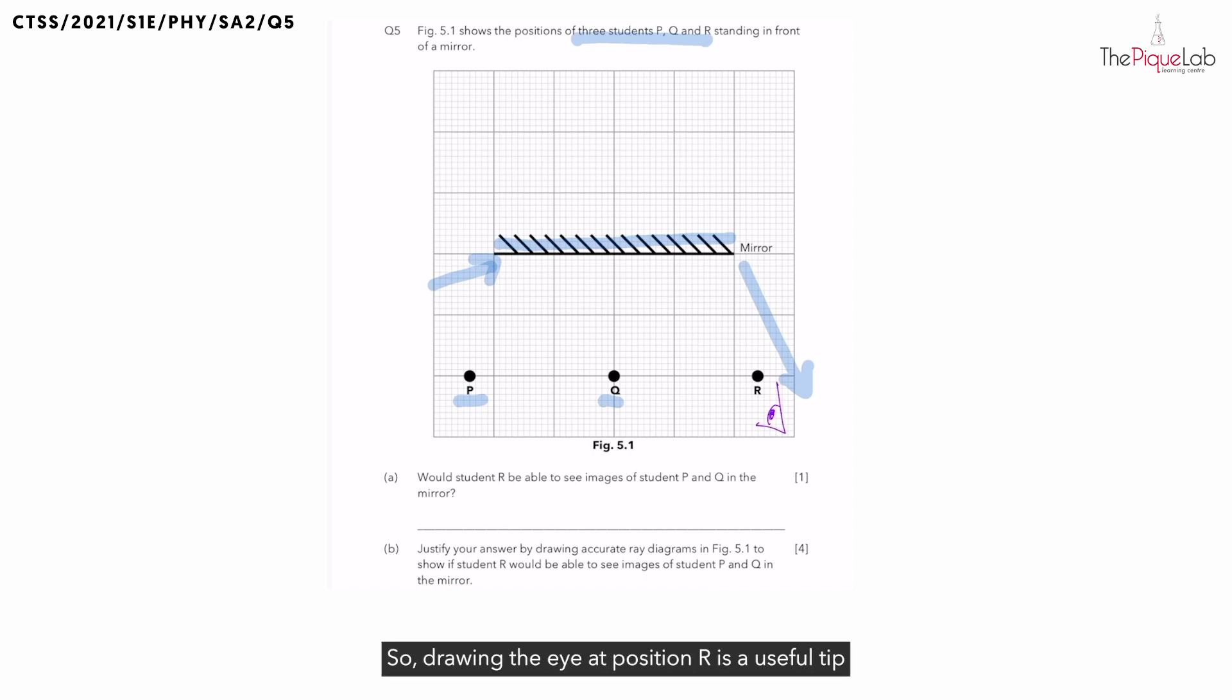So drawing the eye at position R is a useful tip to remind me that for student R to be able to see the reflections of P and Q, the light rays must be heading towards the eye in that direction.